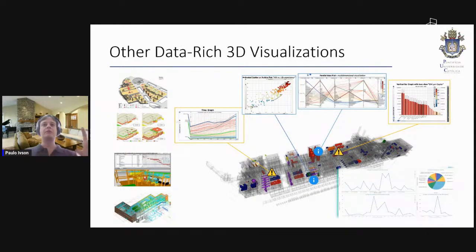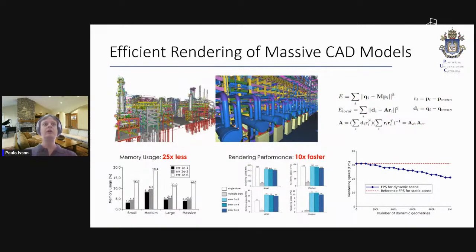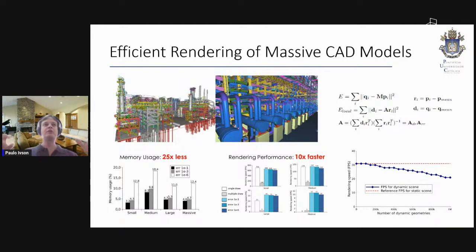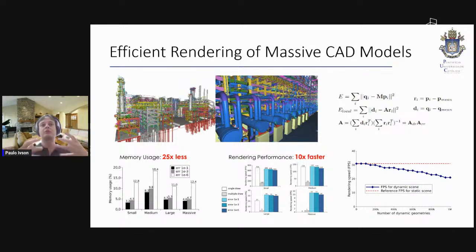We can generalize this to what we call Data-Rich 3D Visualizations — combining 3D spatial views with rich non-spatial information. You can color objects by criteria, add icons, create graphs. Many information visualization and user interaction techniques can guide the user to where they need to look, aiding understanding, planning, or remote management. But this is only possible if we can efficiently render these CAD models — they are very complex with enormous geometry because they represent reality precisely, sometimes down to individual bolts.